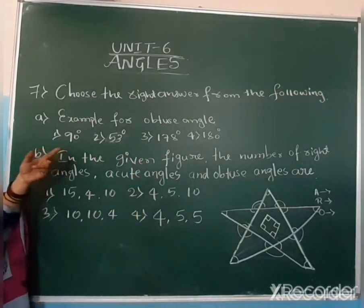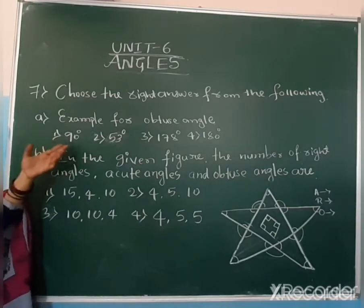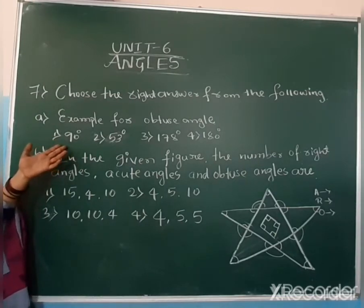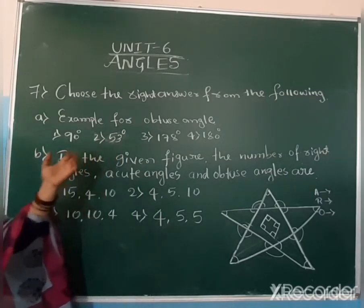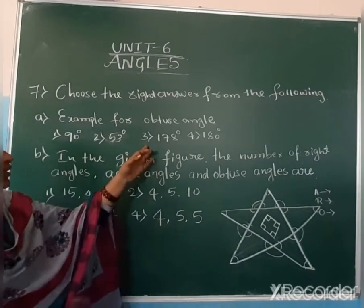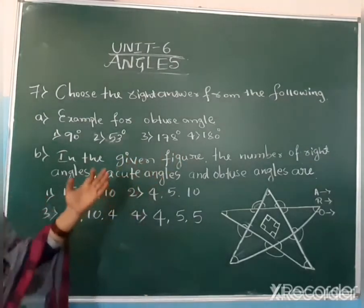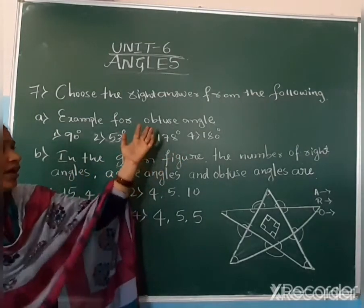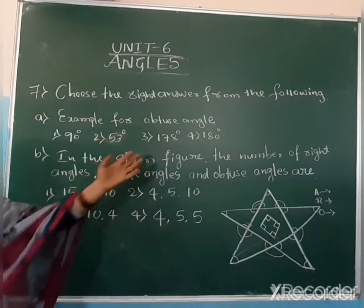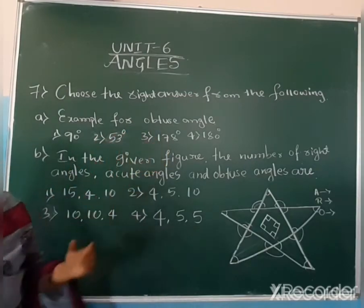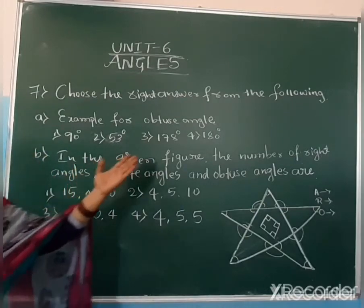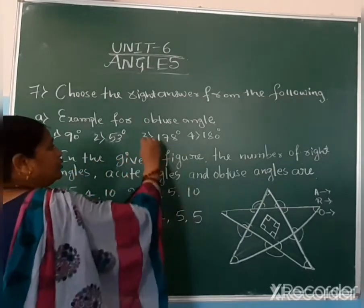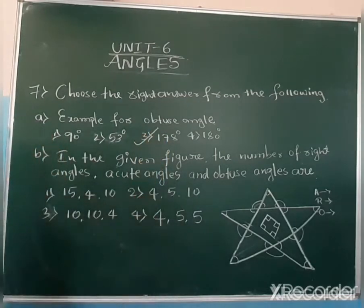90 degrees is a right angle, so it is not an example of an obtuse angle. 53 degrees is an acute angle — less than 90 degrees. 178 degrees is the correct answer — it is above 90 degrees and below 180 degrees, so it is an obtuse angle.